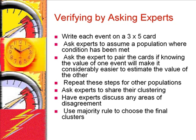Gustafsson and others described a procedure for assessing independence by directly querying experts. The steps are: write each event on a 3x5 card; ask experts to assume a population where the condition has been met; ask the expert to pair the cards if knowing the value of one event will make it considerably easier to estimate the value of the other; repeat these steps for other populations; ask experts to share their clustering; have experts discuss any areas of disagreement; and use majority rule to choose the final clusters.